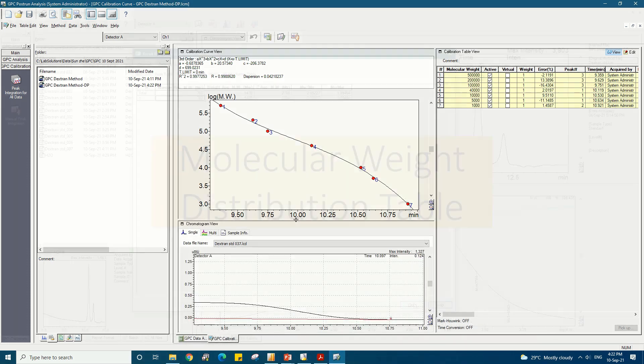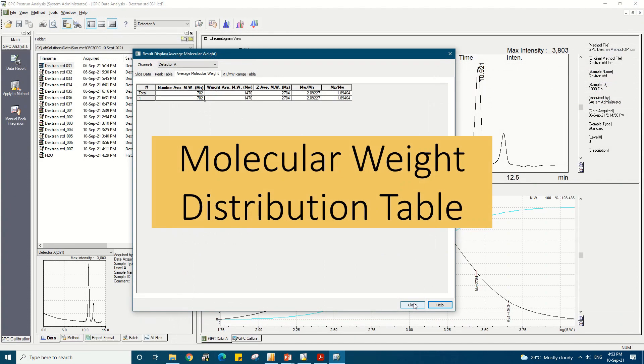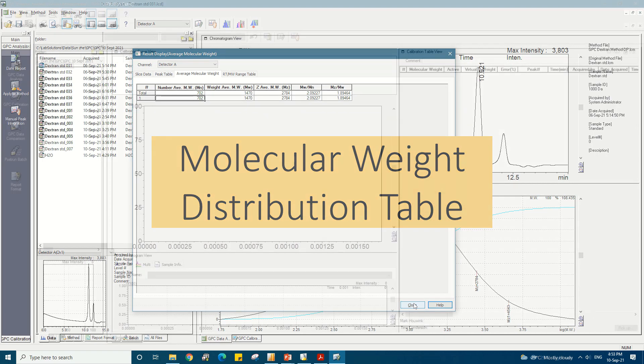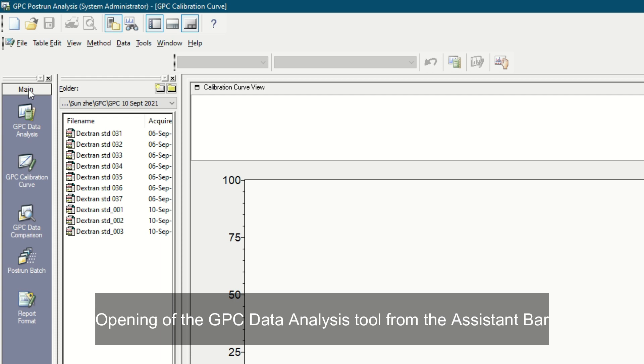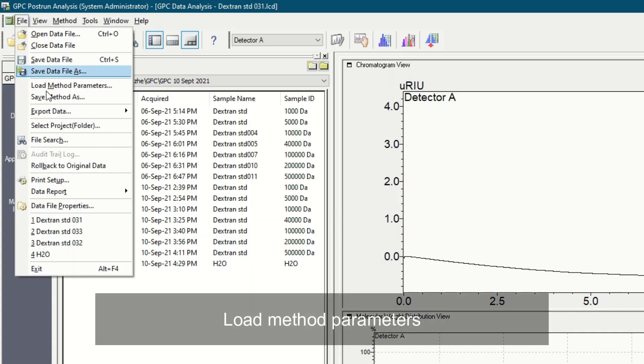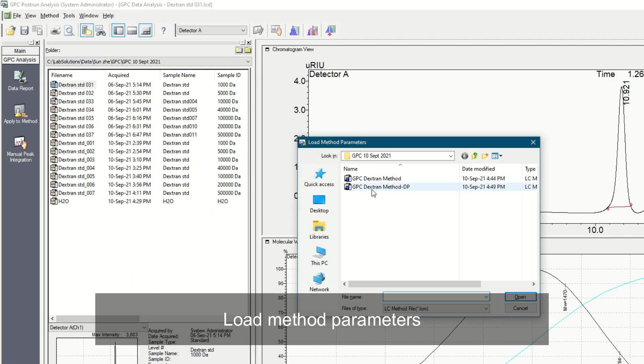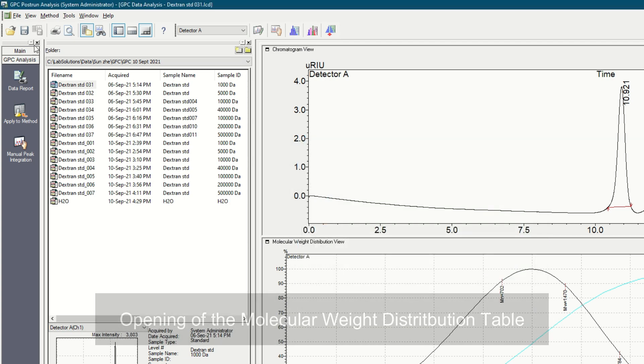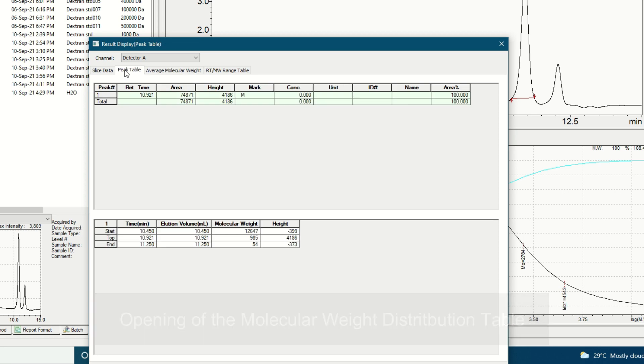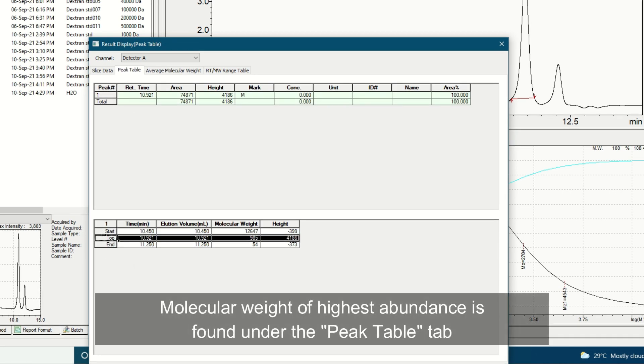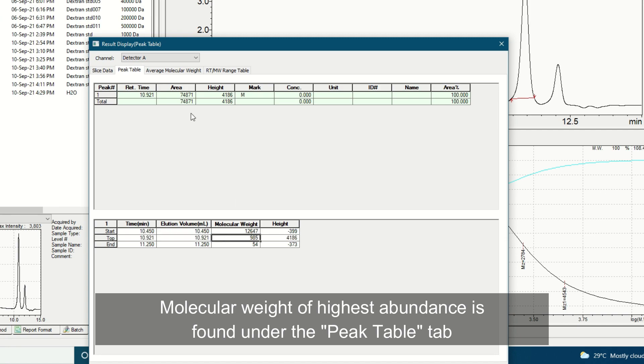Having obtained the calibration curve, we can now find out the molecular weight distribution of unknown samples. Open the GPC data analysis tool from the assistant bar and then load the method file containing the calibration curve. The molecular weight distribution table can then be opened from the view menu. Under the peak table tab, the molecular weight value at the peak top can be found in the bottom table, and this indicates the molecular weight of highest abundance.